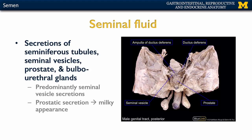The accessory sex glands we've discussed are going to be your seminal vesicles, the prostate, the bulbourethral gland, as well as the secretions of the seminiferous tubules — and as we know, that's where spermatogenesis occurs, so that's where the sperm is going to form. The seminiferous tubules will continue on into the epididymis, and the epididymis will continue on in terms of the ductus deferens.